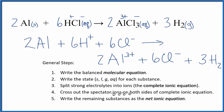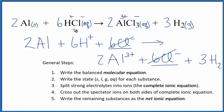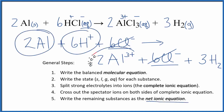Now we can cross out spectator ions — ions that appear on both sides of the equation. We can see that Cl⁻ is in the reactants and in the products, so we cross that out. We had 6 Cl⁻ on each side — it hasn't changed, so we're not interested in it. Aluminum is very different from Al³⁺: one is a solid metal, the other is an ion dissolved in water, so we leave those as they are.